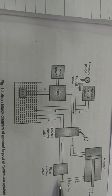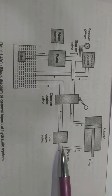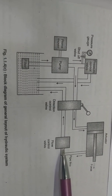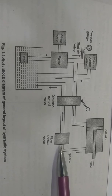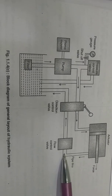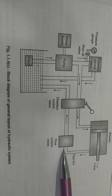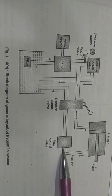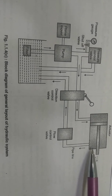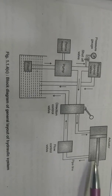The next component is the flow control valve. There are different types of flow control valve. The main function of the flow control valve is to regulate the flow rate of the oil. When we regulate the flow rate, we can obtain different speeds of the actuator by operating the flow control valve.